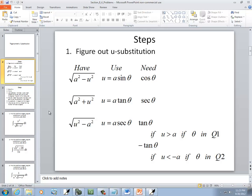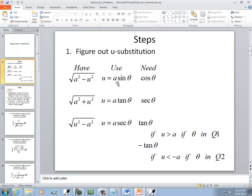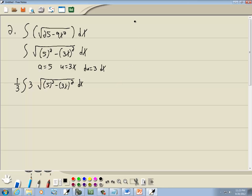Now remember our steps. Our first step is figure out our u substitution. Here we got a squared minus u squared. If I were to plug these in, a squared minus u squared, this says we use u is equal to a sine theta. So u we just said was 3x, a is 5, and then we got sine theta.